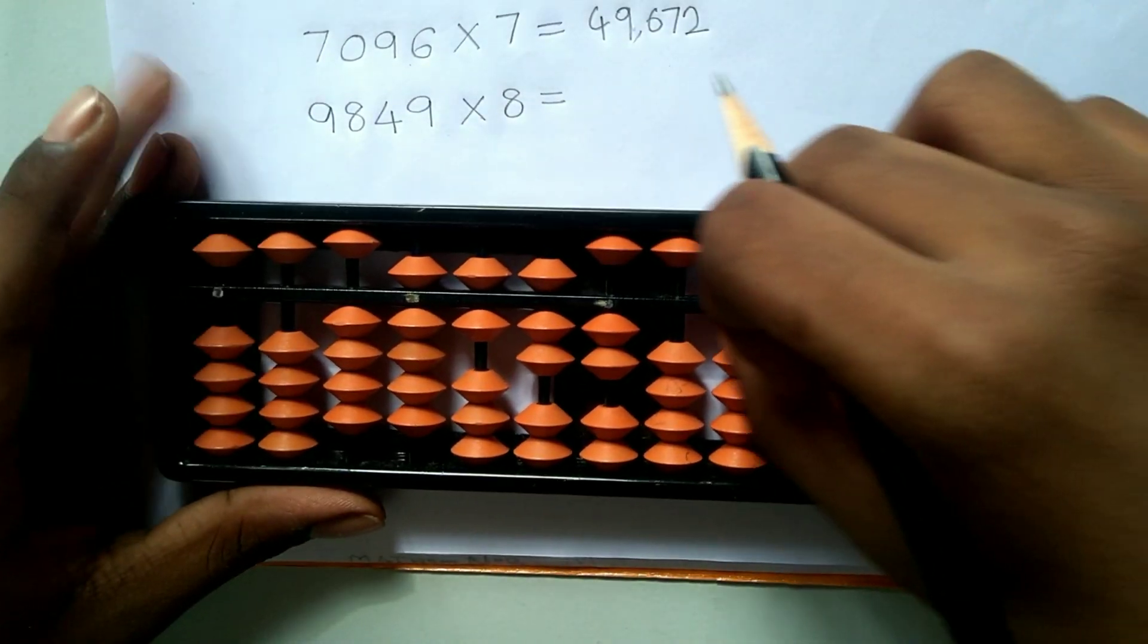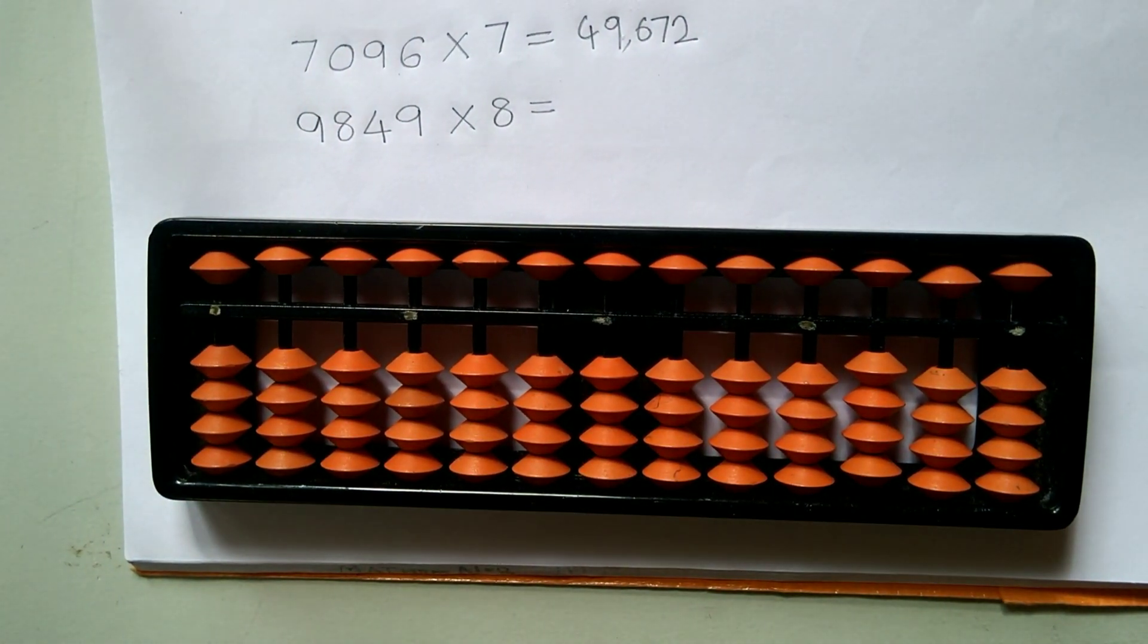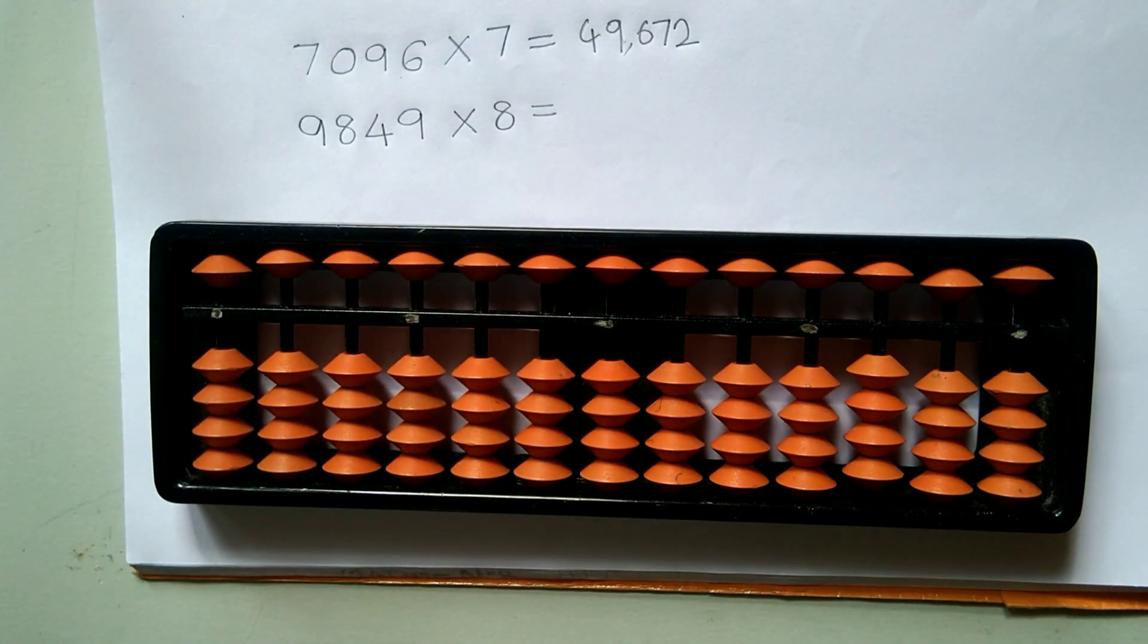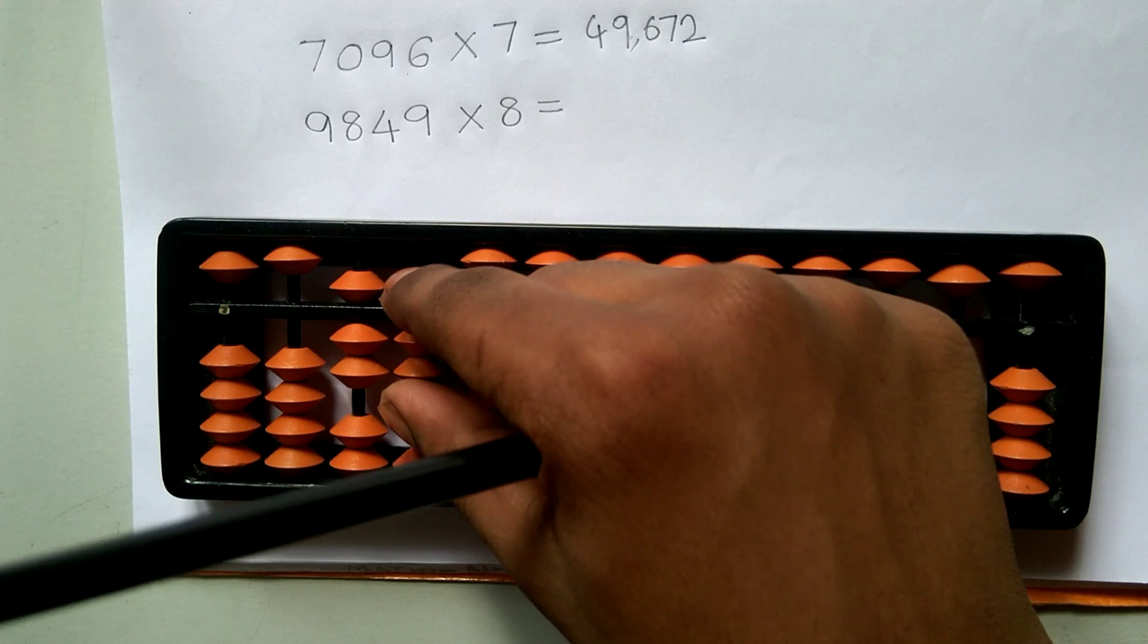And now let's go for the last example. 9849 × 8. As we know, the first step is to multiply the first 2 digits with the second number. Which means 98 × 8. 9 eights are 72. 8 eights are 64. So 784.